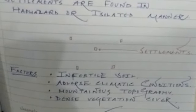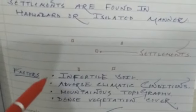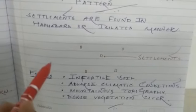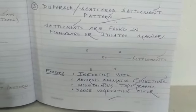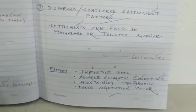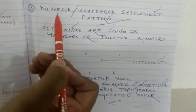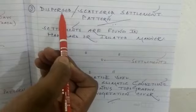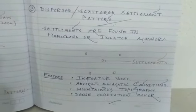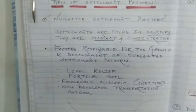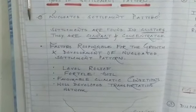These are the factors contributing to the development of dispersed settlement patterns. In the hilly regions of northeastern states and in the Himalayan mountain region, you will find dispersed settlement patterns. If you go to the Gangetic West Bengal, you will find nucleated settlement patterns.